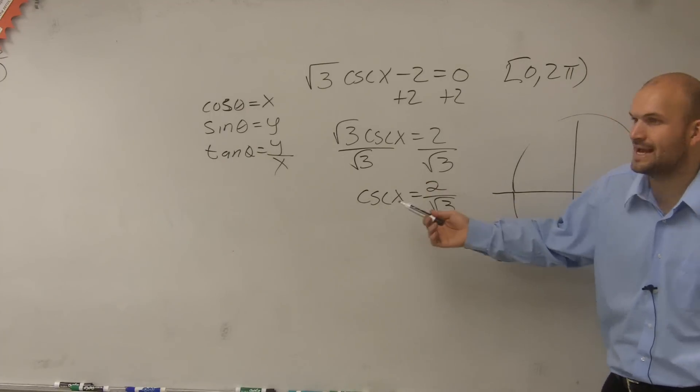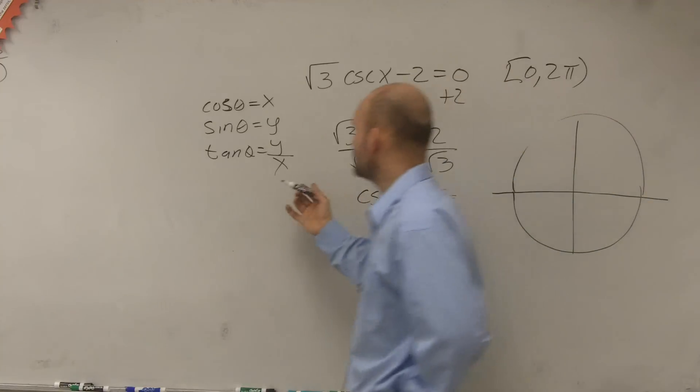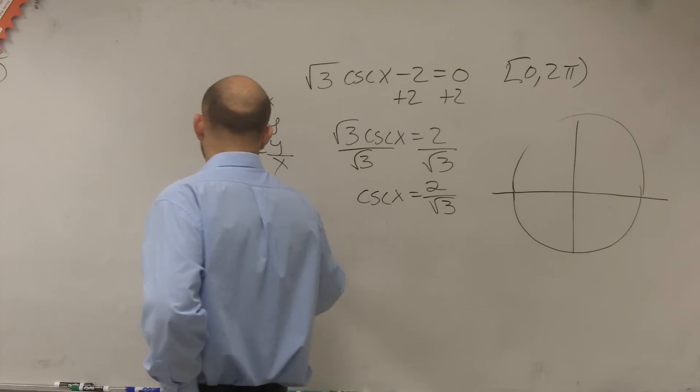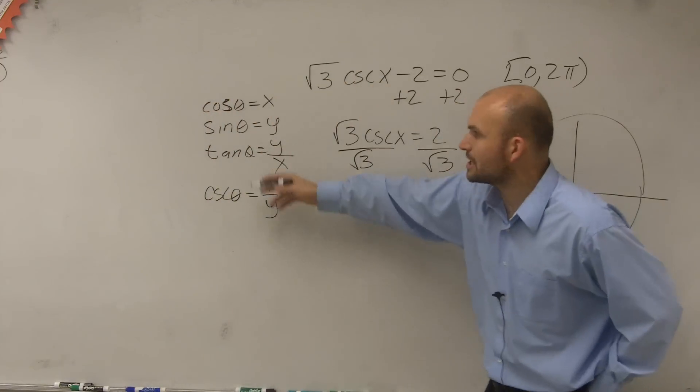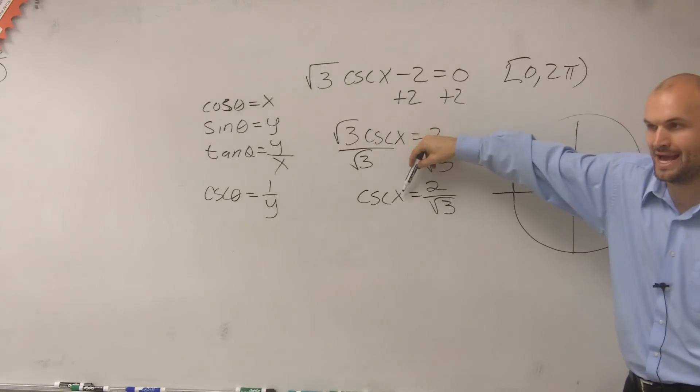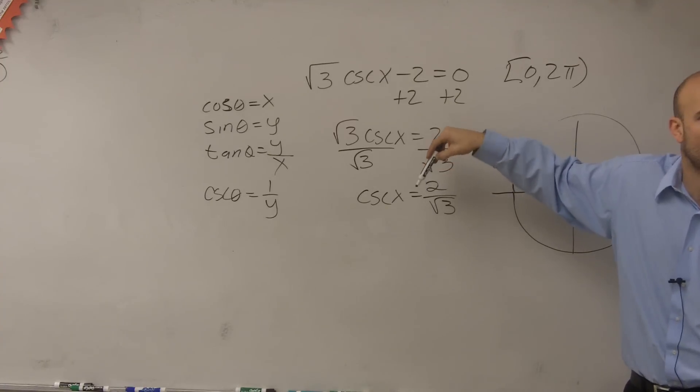So how is cosecant going to be related to sine? Because if I was going to pick on the unit circle, I could easily find what the y coordinate is. But finding the cosecant is a little bit different. So remember that cosecant of theta equals 1 over y, right? These are reciprocals of each other. So rather than trying to find the angle x that represents the 1 over y coordinate, let's just change this to the y coordinate.